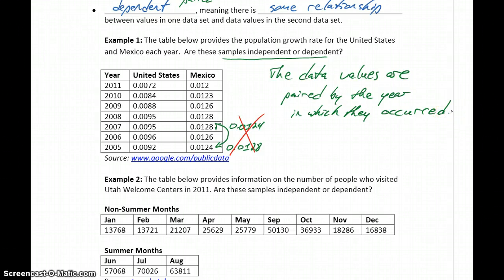If we were to rearrange those numbers, we'd be changing the information that we were reporting. We'd basically be changing the history of what actually happened each year. So that means these samples are dependent because there is some relationship between these two numbers. These are both the numbers that occurred in one particular given year, and the same for each of those other pairs. If we have data that's paired up by year, then we have dependent samples.